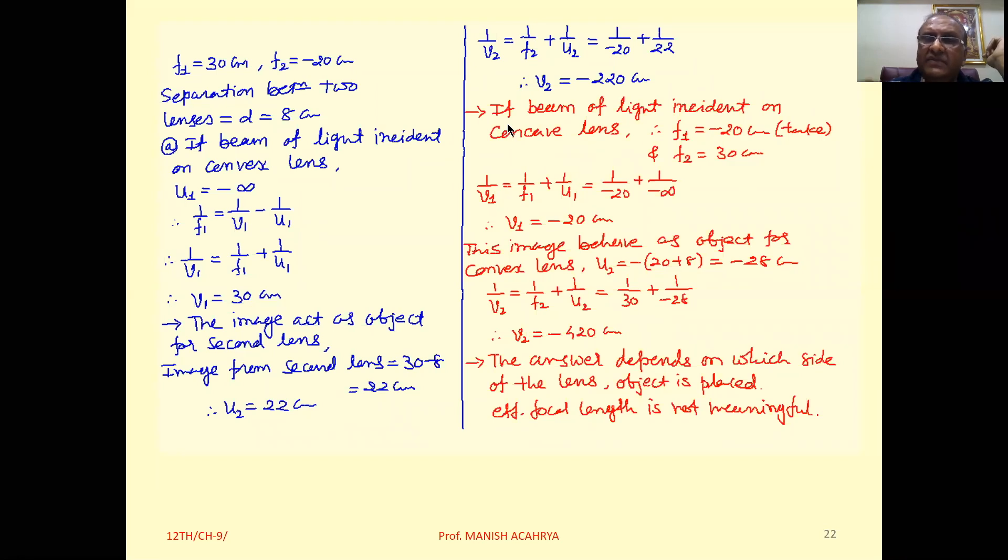If the beam of light is incident on the concave lens, then F1 equals minus 20 centimeter and F2 equals 30 centimeter.